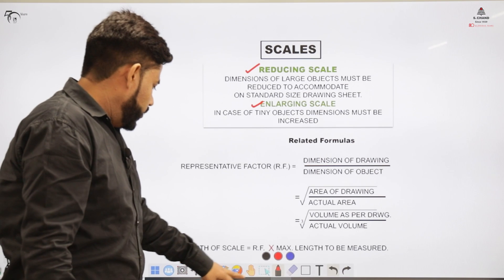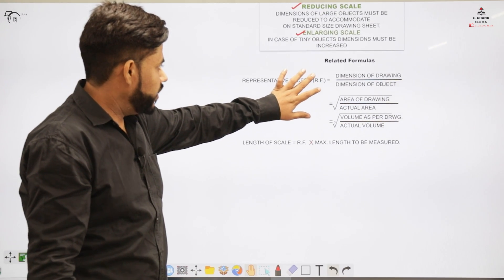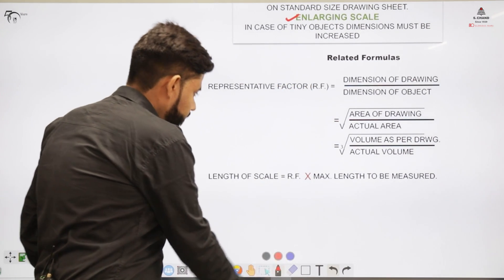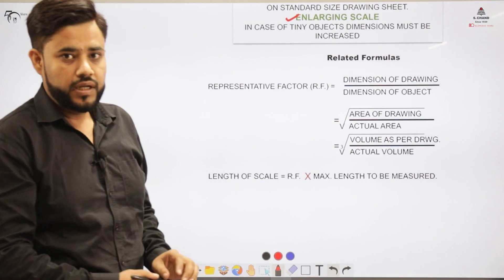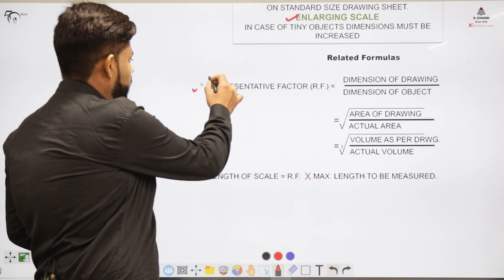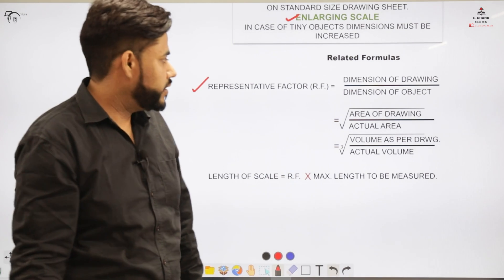We would be using certain formulas here. So let us have a look at those formulas. These formulas are related to the scale part. In this you will be having one case which is the RF factor which is the representing factor and that would be equal to the dimension on the drawing divided by the dimensions on the object.